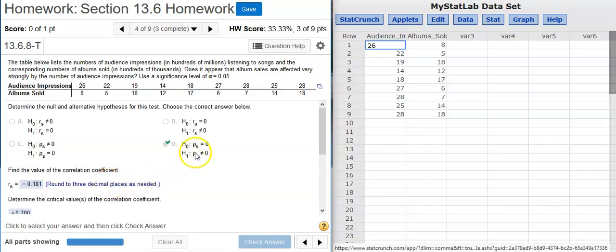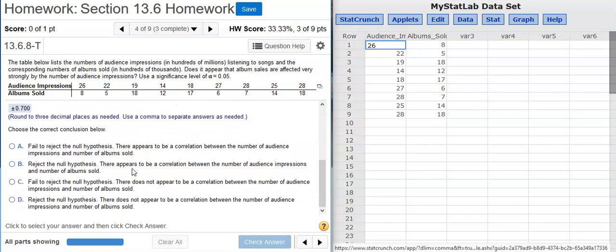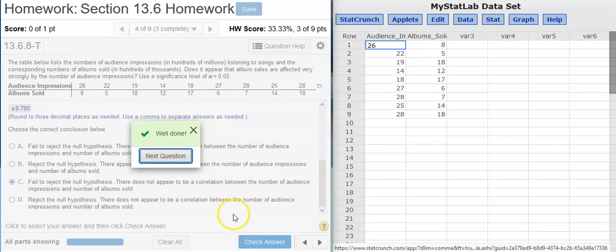Well, we failed to reject the null hypothesis, which means it's potentially true. And here the null hypothesis says there is no correlation. So it's potentially true that there is no correlation. So there does not appear to be a correlation is what we're going to answer. Well done!